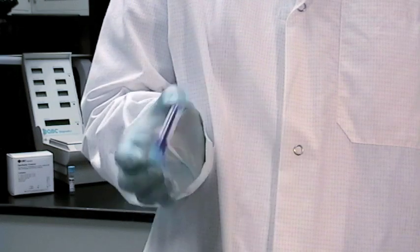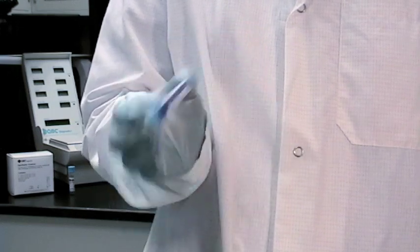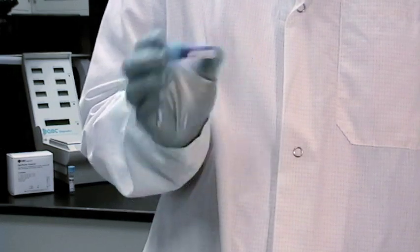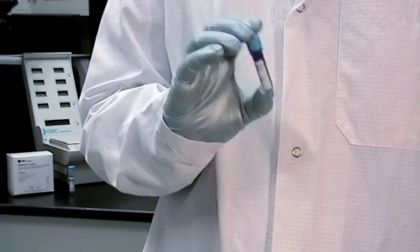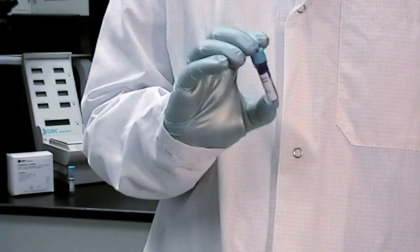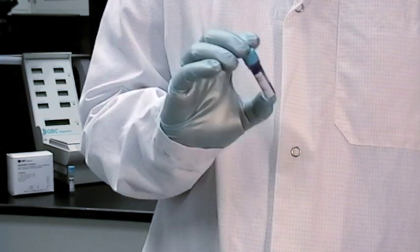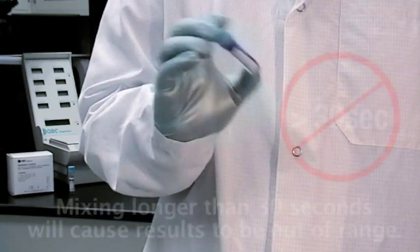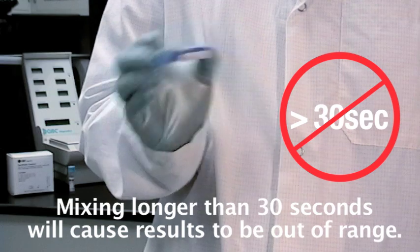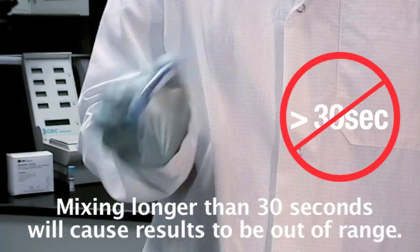During this step, the vial must be completely inverted, allowing the control to run down the sides of the vial repeatedly. It is important to make sure that this step is done briskly, since slower inversion will not provide adequate mixing and will yield poor results. Also note that mixing longer than 30 seconds will cause results to be out of range.